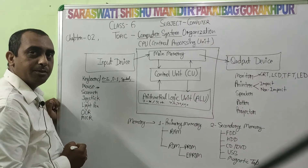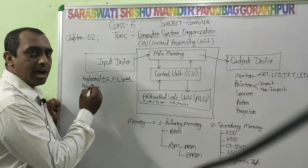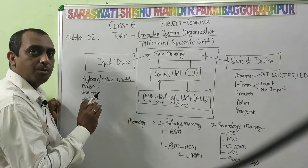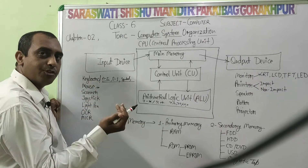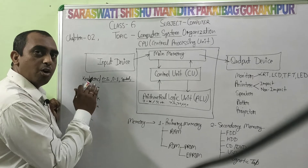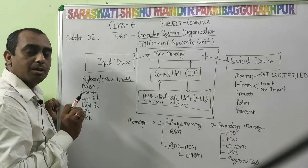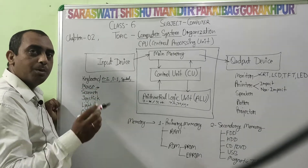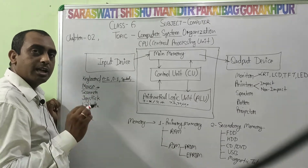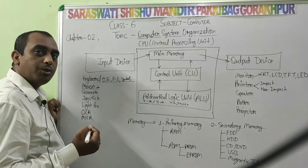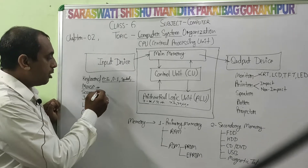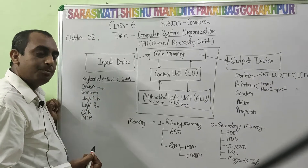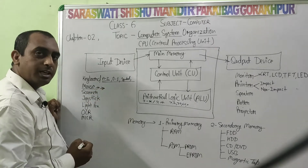Mouse is a pointing device. Mouse is used to control icons on the desktop, transfer and feed data from one drive to another, and operate any operation in a very easy method. Mouse is especially used in creating drawings and paintings.